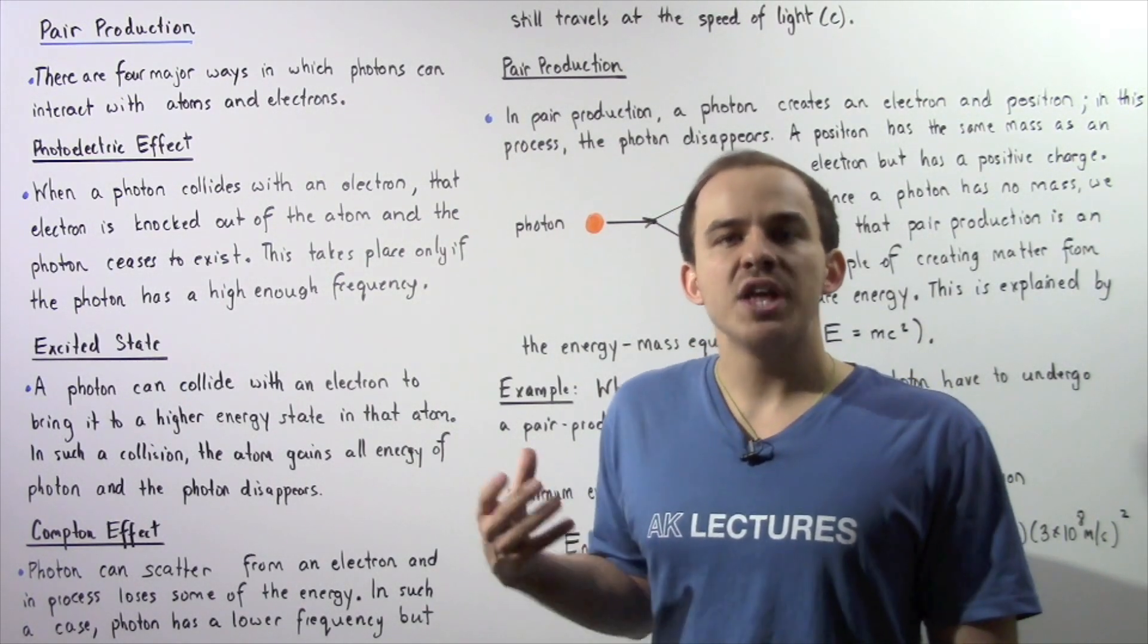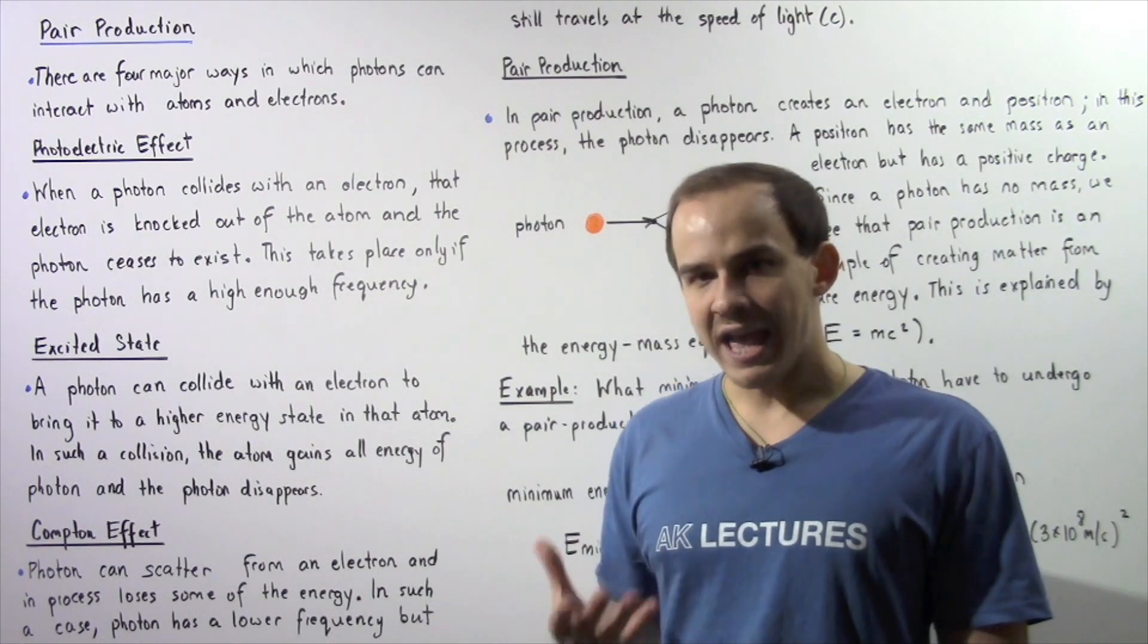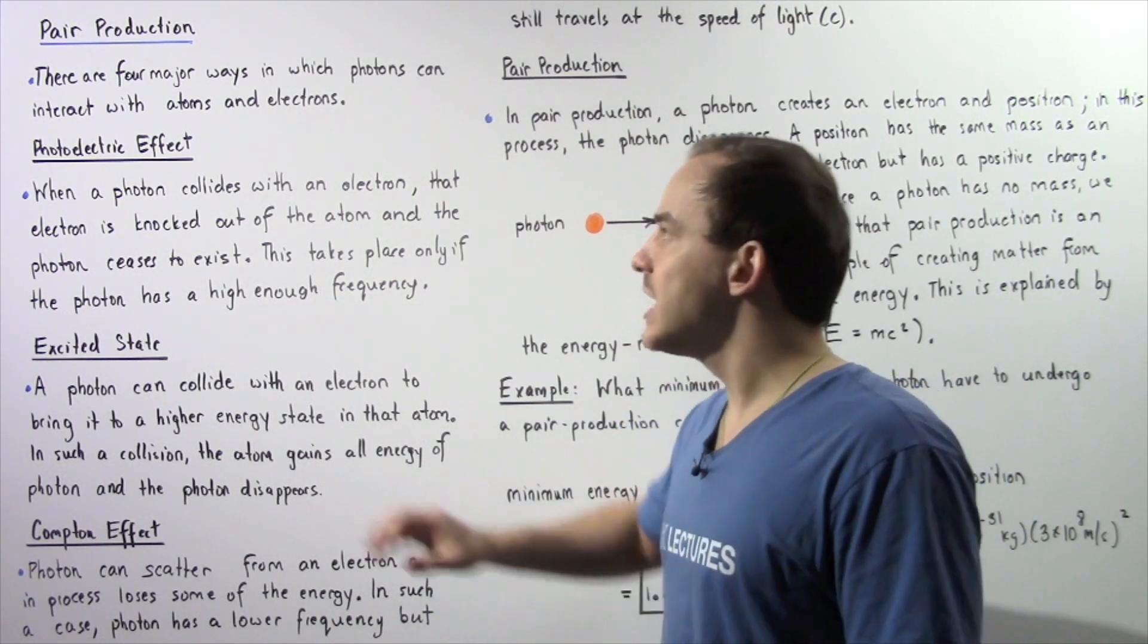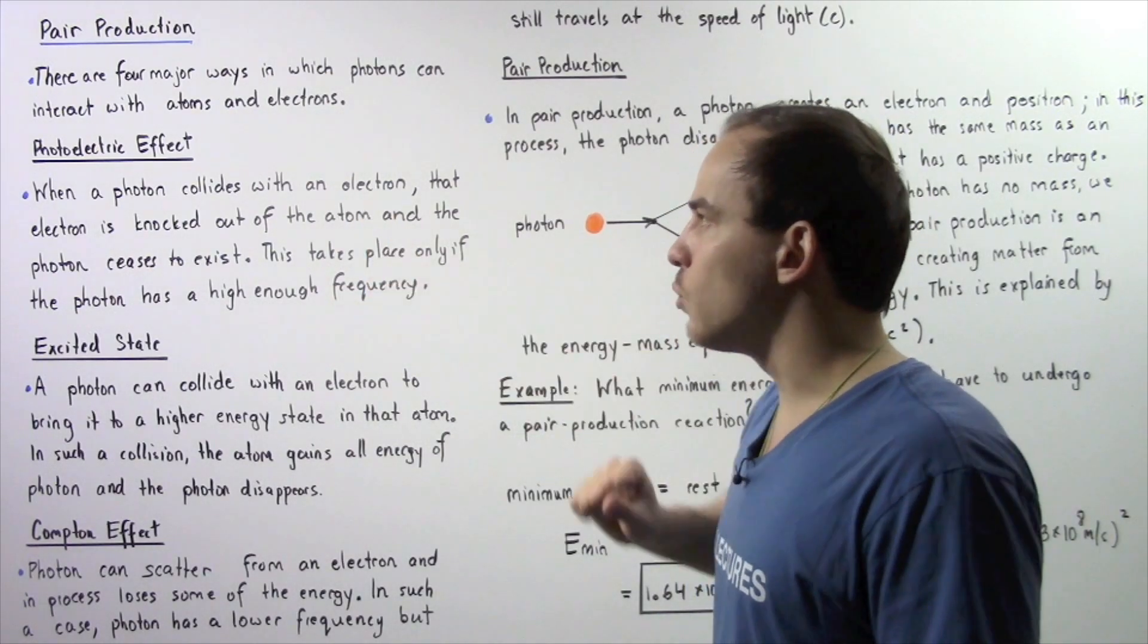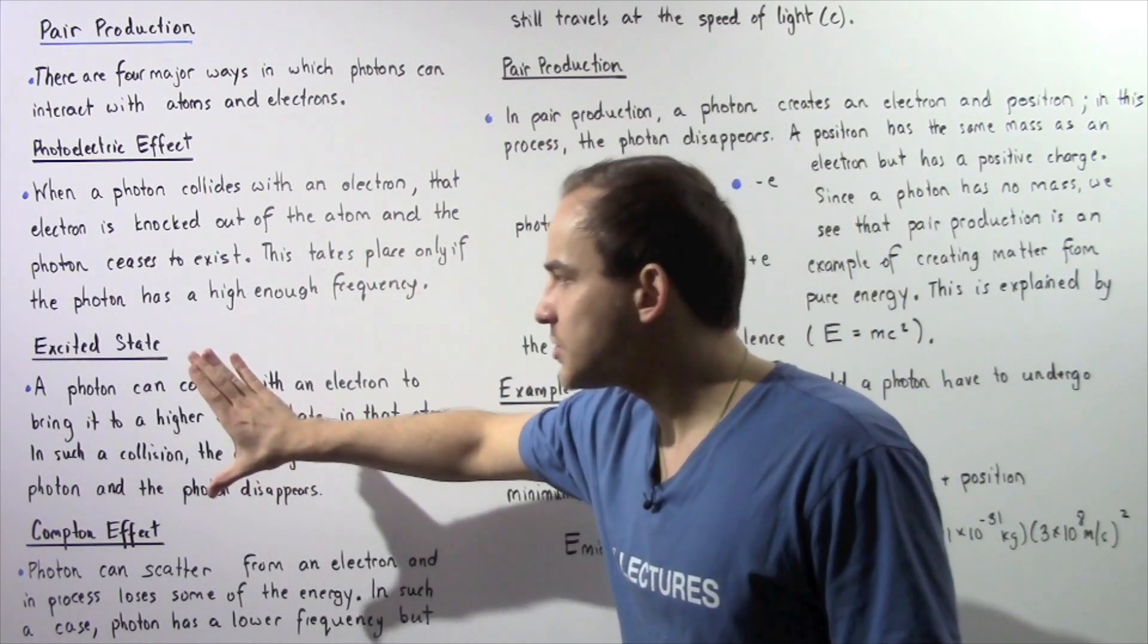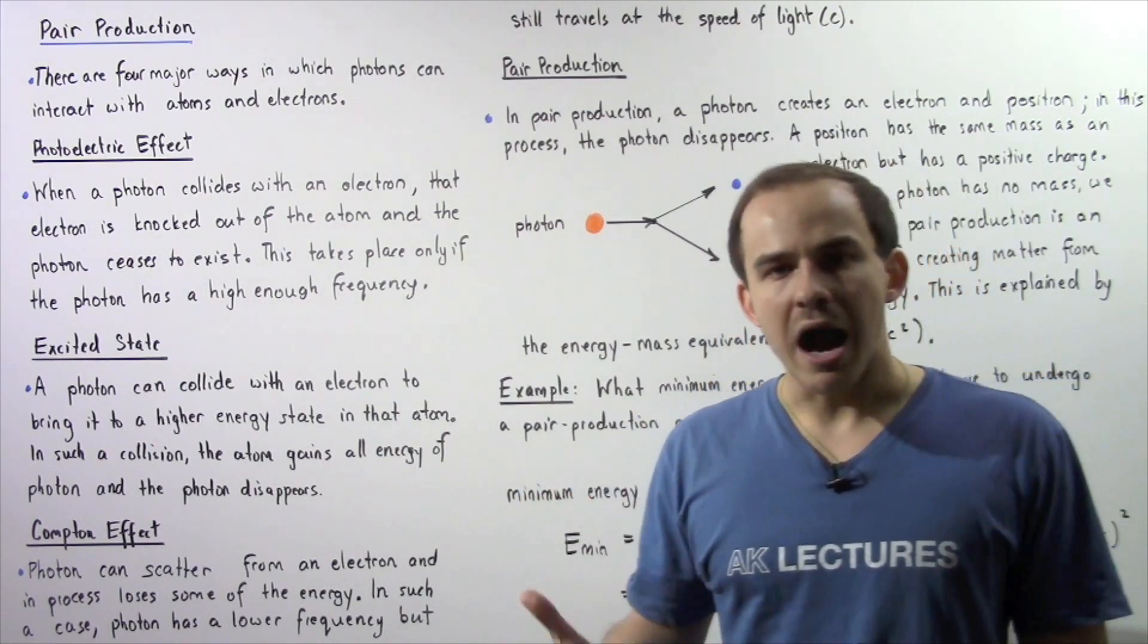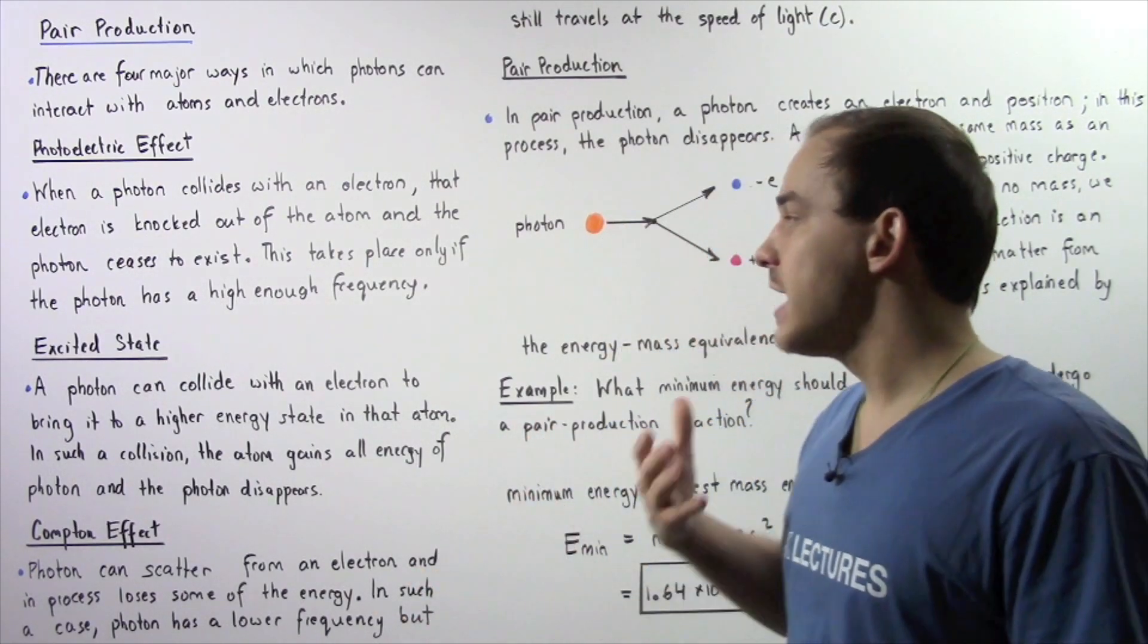the atom gains all the energy that the photon had, and the photon ceases to exist as in the case of the photoelectric effect. We'll discuss this in more detail when we discuss the Bohr model of the atom.